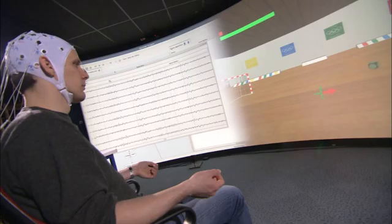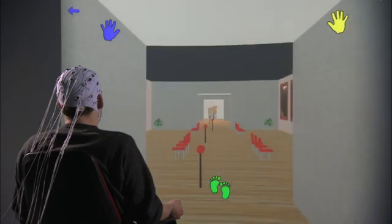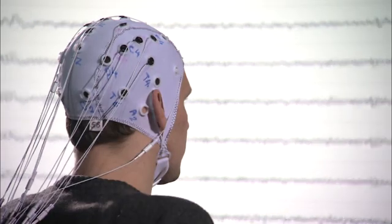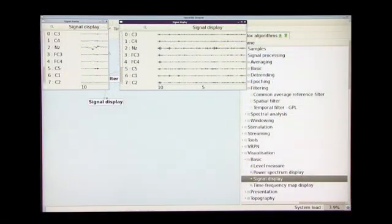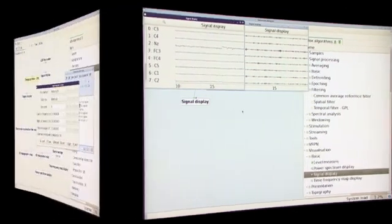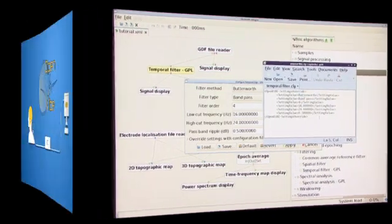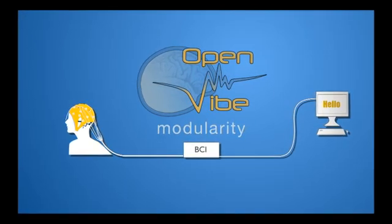OpenVibe is a software platform for designing, testing and using brain-computer interfaces. It is software for real-time processing of brain signals, and can be used to acquire, filter, process, classify and visualize brain signals in real-time. OpenVibe is a library of functions written in C++, which can be integrated and applied quickly and easily using modules.